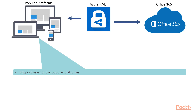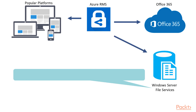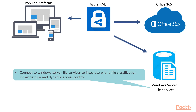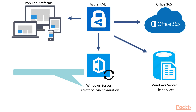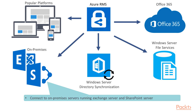It also supports popular platforms like Windows, Mac OS, iOS, Android, and Windows Phone. It also supports Windows Server File Services, which connects to integrate with a file classification infrastructure and dynamic access control. Directory synchronization uses a common identity for your on-premises Active Directory and Azure Active Directory. Everything can connect to your on-premises server, like the Exchange Server or the SharePoint Server. So Azure Rights Management Services provide management and security for all of the features it can connect to and provide access to.